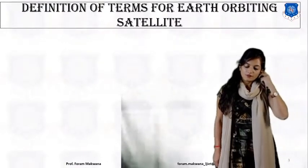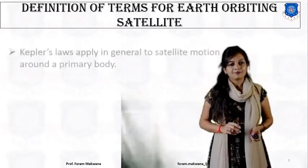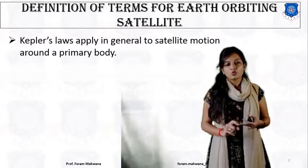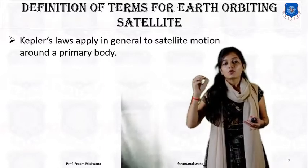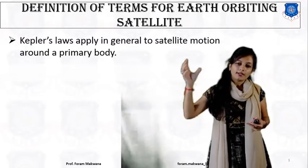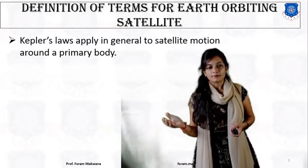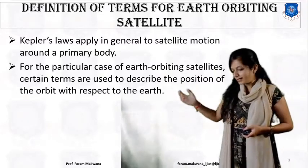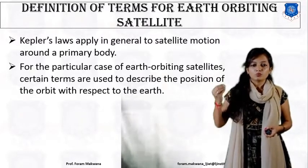The first topic is definitions of terms for earth orbiting satellite, governed by Kepler's law. Kepler's law is applied in general to satellite motion because the satellite follows a specific law to move around the earth. The satellite is the secondary body and Earth is the primary body. For the particular case of earth orbiting satellite, there are certain terms used to describe the position of the orbit with respect to the earth.